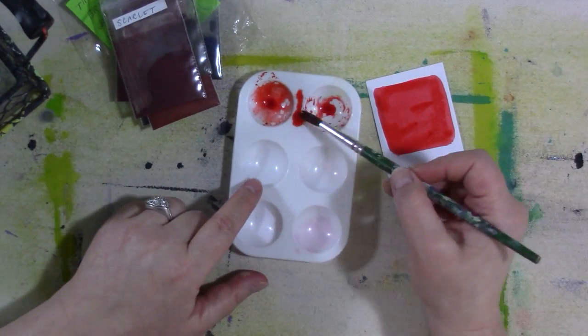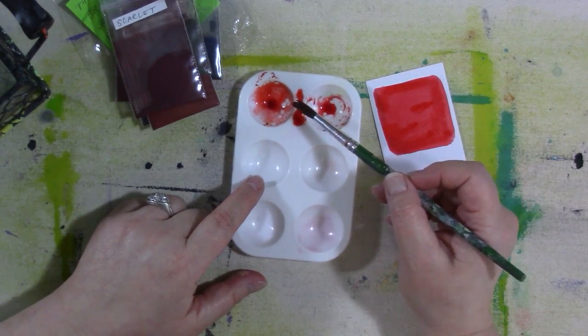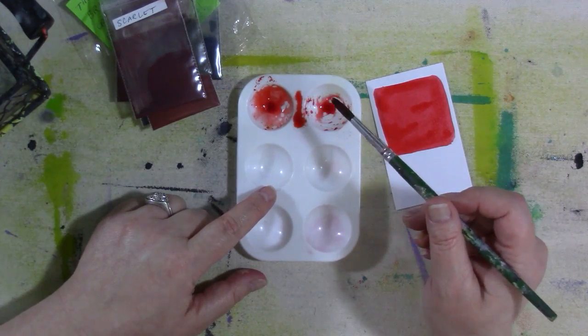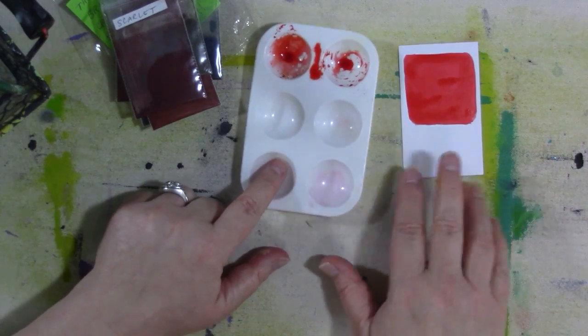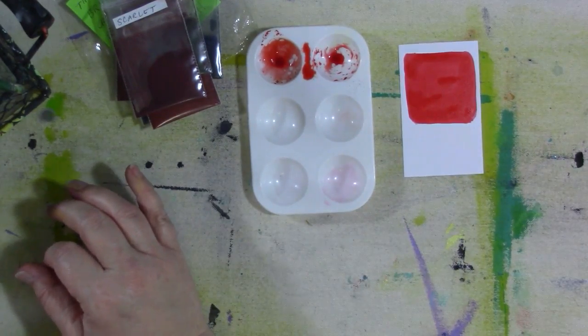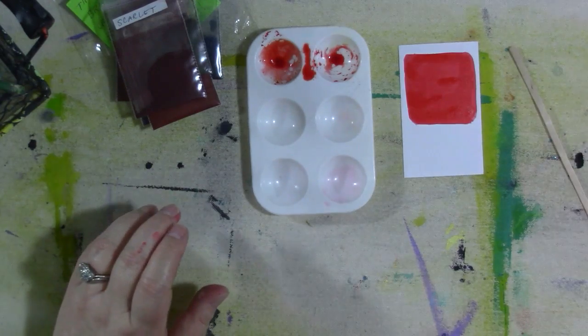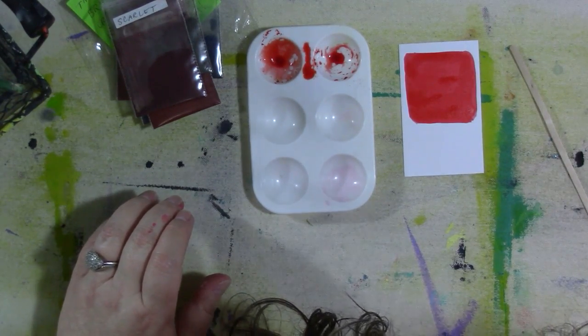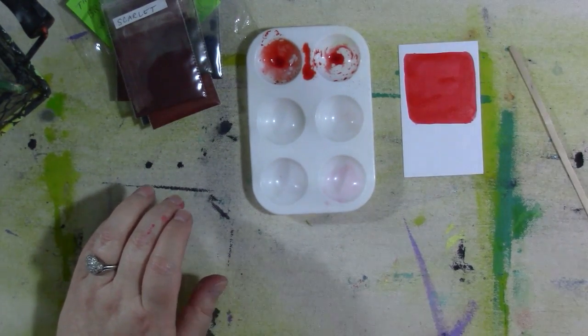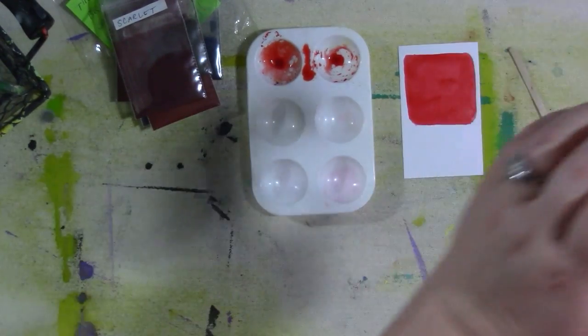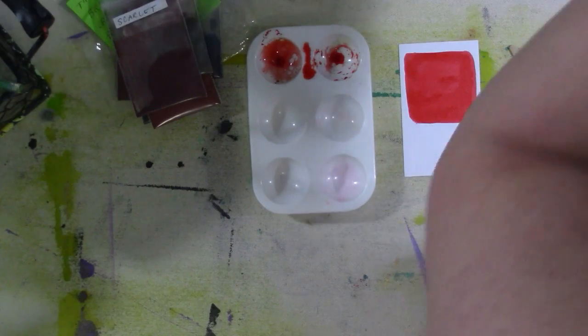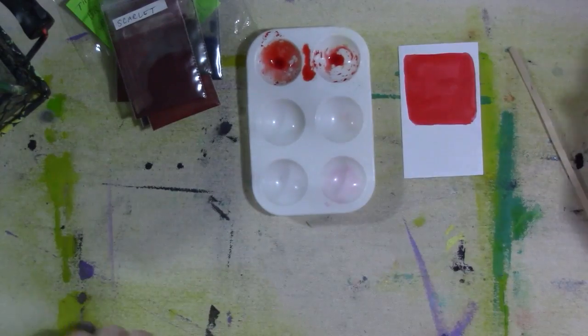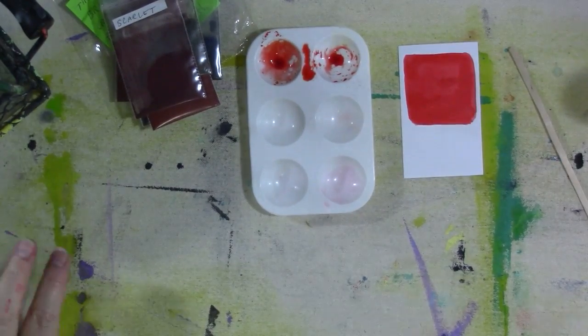Now when I activated it originally I just did it with only water. So now I want to do another experiment. I need another little stick. And I'm going to use gum arabic. So gum arabic is a binder, traditional binder used in watercolor paints.